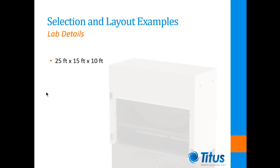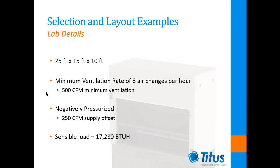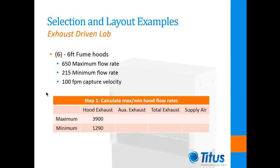Now we'll take a look at a few examples. For these examples we will consider a 25 foot by 15 foot lab with a 10 foot ceiling. The minimum ventilation rate will be 8 air changes per hour, which is 500 CFM based on the room volume. To maintain negative pressurization we will maintain a supply airflow rate of 250 CFM less than the exhaust flow rate. The sensible load in these labs is 17,280 BTU per hour. The fume hoods used will be 6-foot hoods with maximum exhaust flow rates of 650 CFM each, minimum airflow rates of 215 CFM, and a capture velocity of 100 feet per minute.